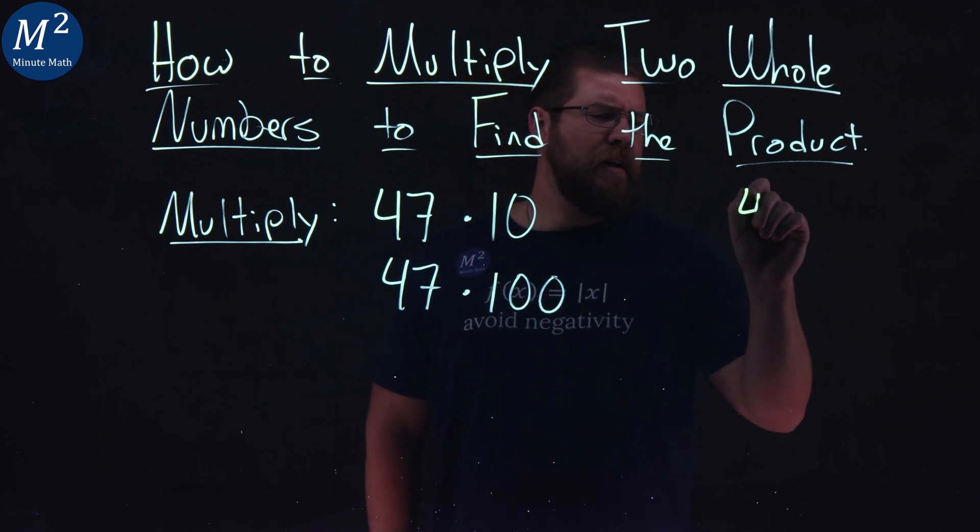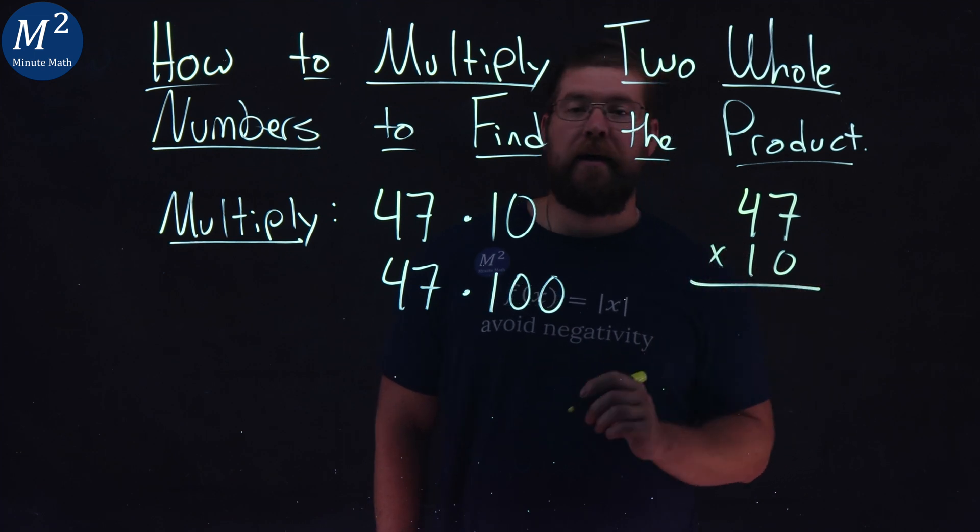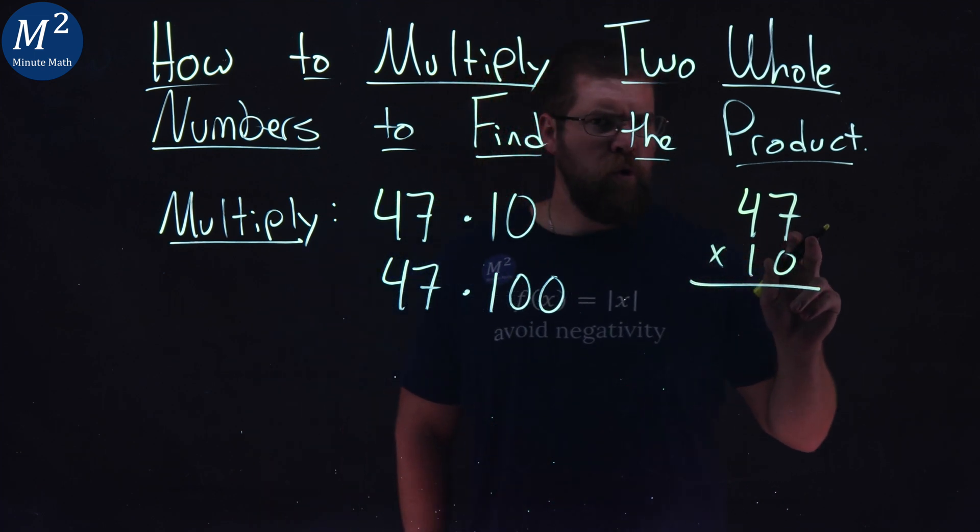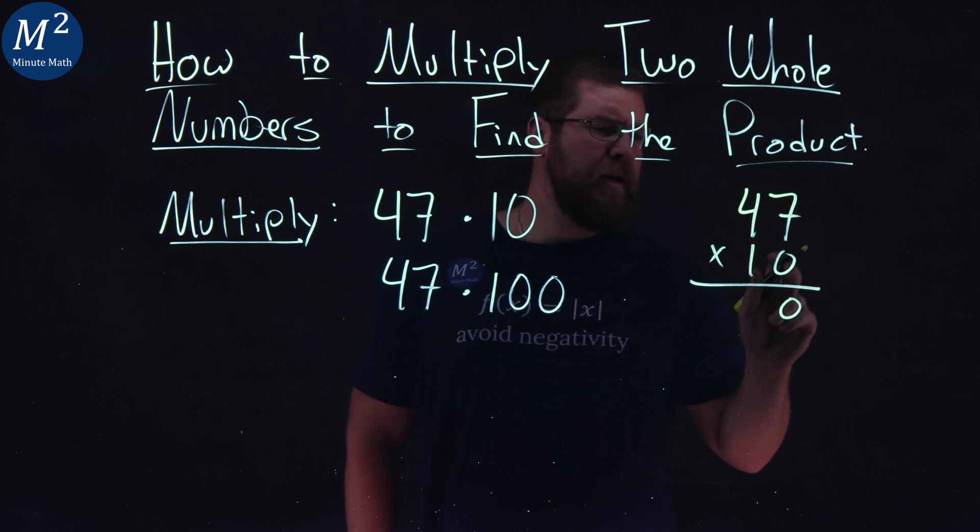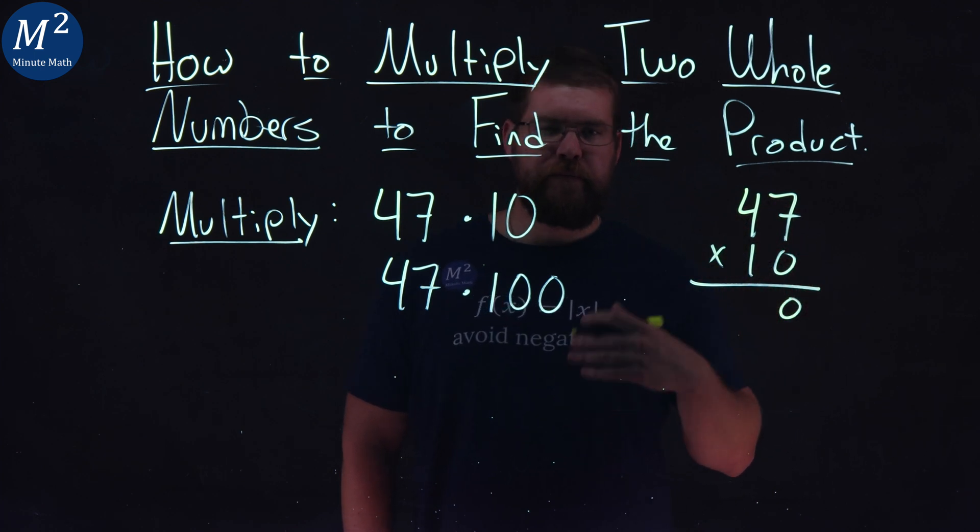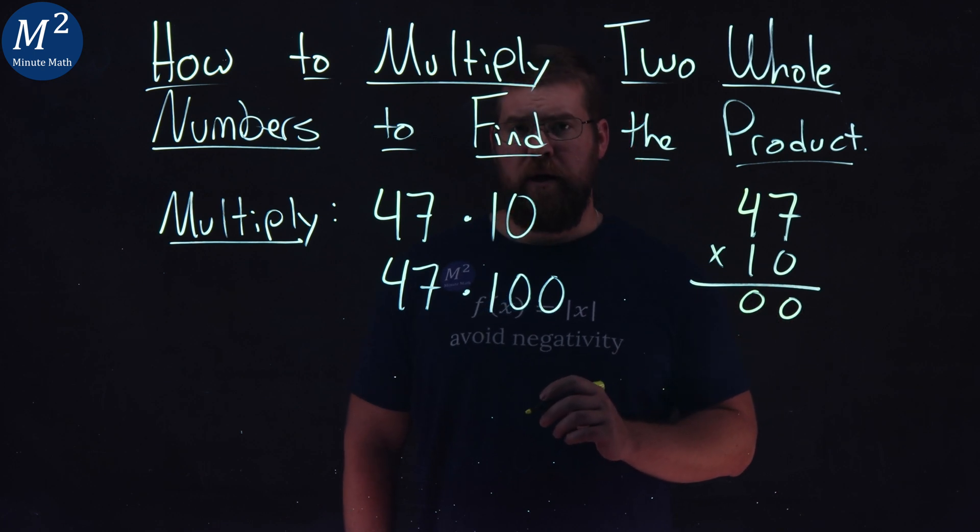So I'm going to take my 47 first, and underneath it I'll write 10. Let's go and multiply that out. Well, normally we just do zero times each number here. Zero times seven is a zero, and zero times four is a zero as well. Nothing really to do there.